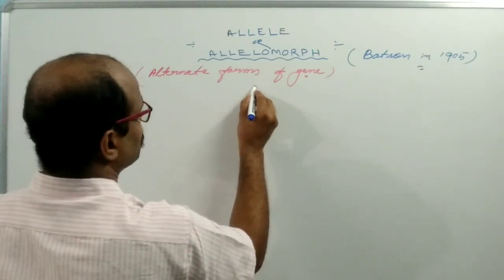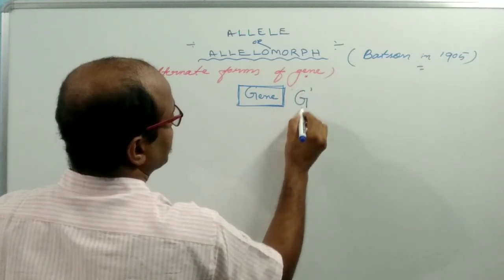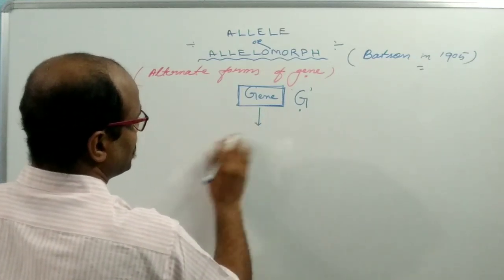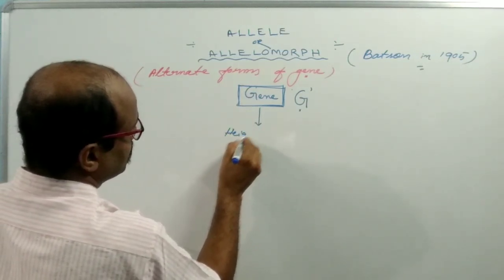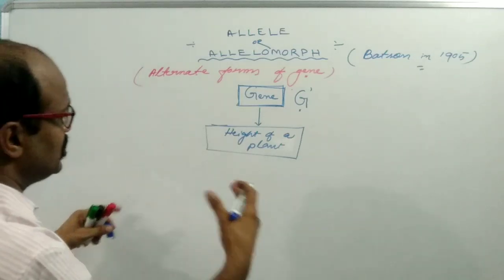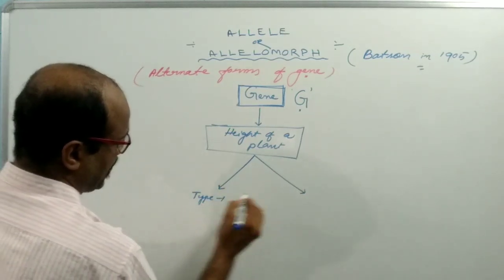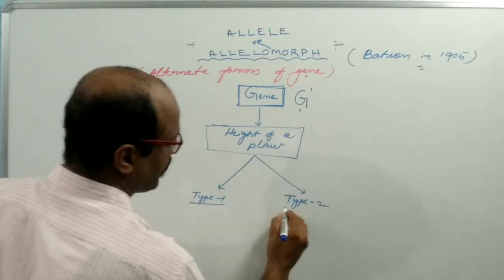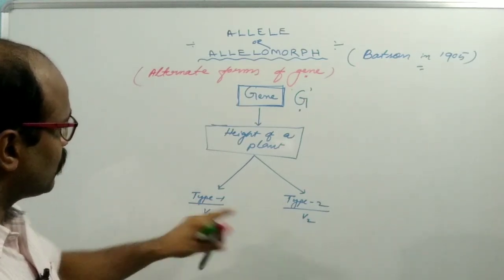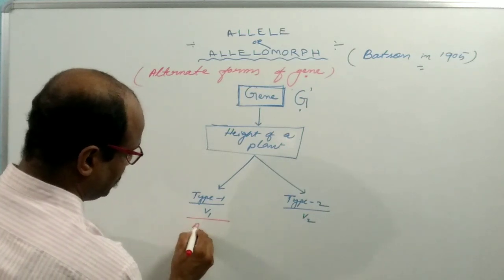Suppose that we have a gene denoted as capital G, and this gene has the tendency to control the height of a plant. This gene has two varieties — type 1 and type 2. These are the two versions of the same gene, capital G, and they are known as Alleles — Allele 1 and Allele 2.